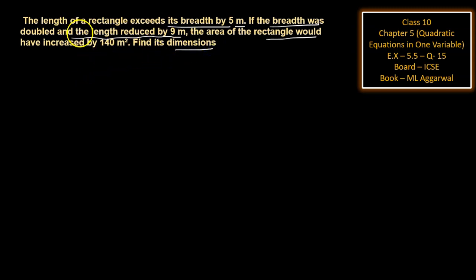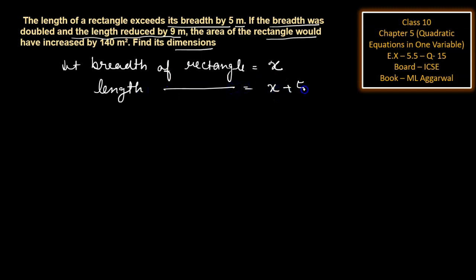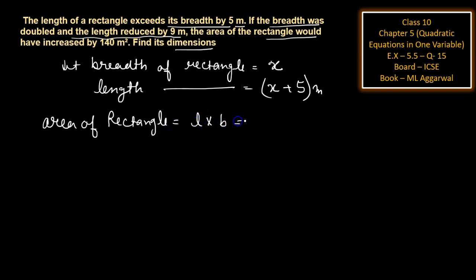First of all, we consider the length and breadth of the rectangle. Let the breadth of the rectangle be x meters, and since the length exceeds the breadth by 5, the length is x plus 5 meters. The area of the rectangle equals length into breadth, which is x into x plus 5.